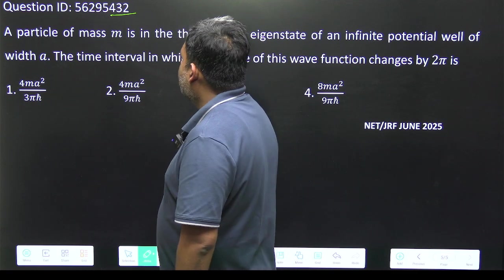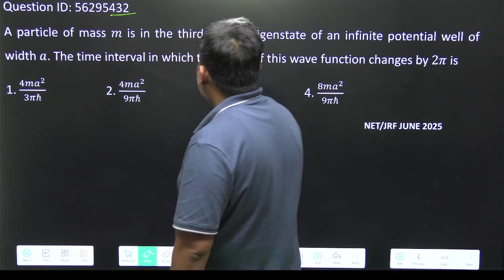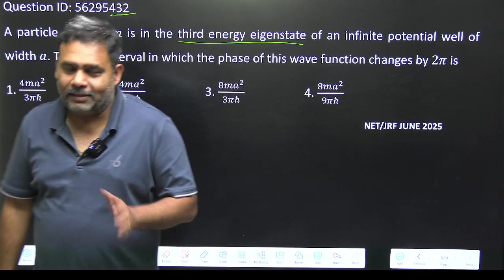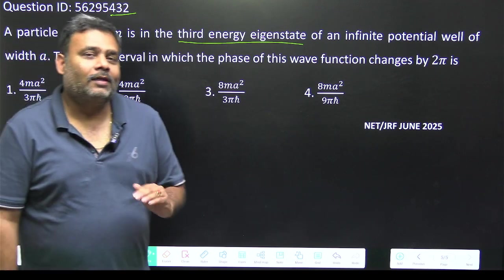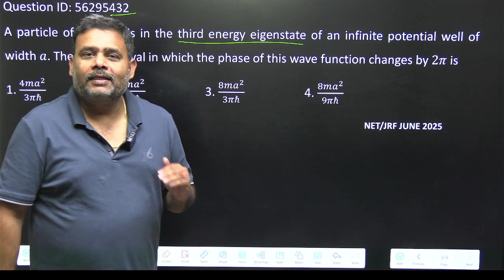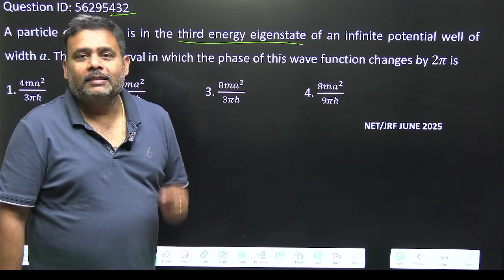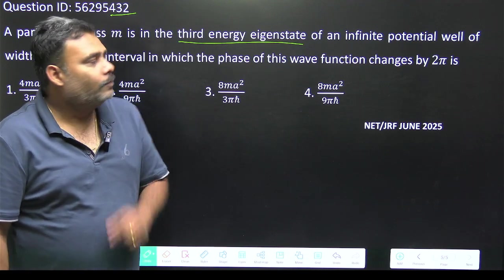In this particular problem, there is a mass m which is in the third energy eigenstate. It is not given third excited state, so don't confuse with the third excited state. Third excited state means n equals 4, but third energy eigenstate means n equals 3. You have to keep this in mind.